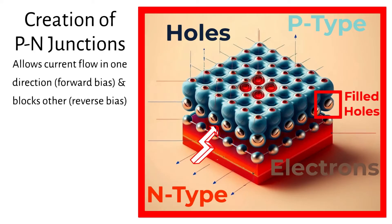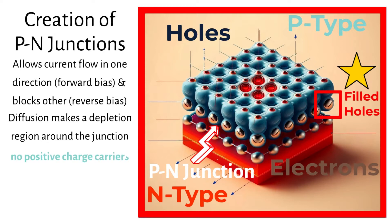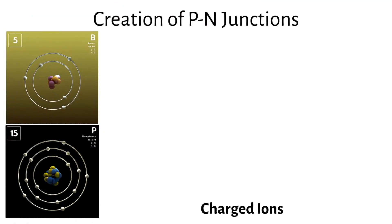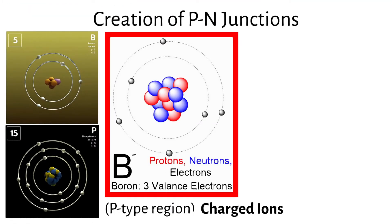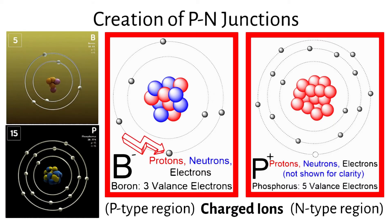At the junction, the extra electrons from the n-type region diffuse into the p-type region and recombine with holes, while the holes from the p-type region diffuse into the n-type region and recombine with electrons, effectively cancelling the doping out. This diffusion results in a depletion region around the junction with no positive charge carriers from holes (p-type) or negative charge carriers from extra electrons (n-type). This creates charged ions such as boron minus in the p-type region and phosphorus plus in the n-type region.